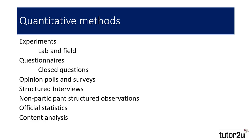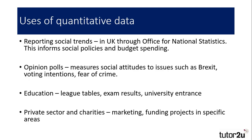Official statistics, usually compiled from other quantitative methods and compiled by the Office for National Statistics in the UK, is another source of quantitative data. And finally, content analysis — while using qualitative data as an input, such as images in magazines and representations on television and movies — produces a quantitative data output.